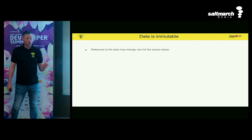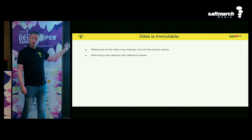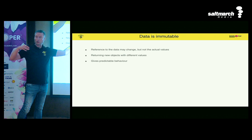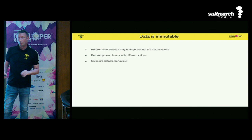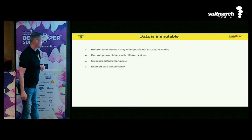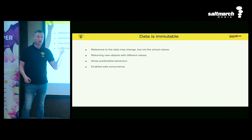Data should be immutable. Immutability means you can change the reference to the data, but you can't change the data itself. You can return a new object with new values but you're not changing the existing objects. This gives predictable behavior: if data could be mutated anywhere along a code path, you'd have to look everywhere to find the bug. With clearly defined mutation points it's much easier to find what went wrong. Immutability also gives safer concurrency — the same data can be accessed by multiple threads at the same time without race conditions.